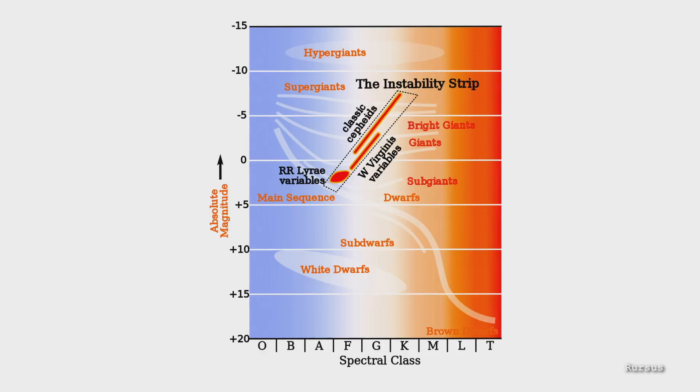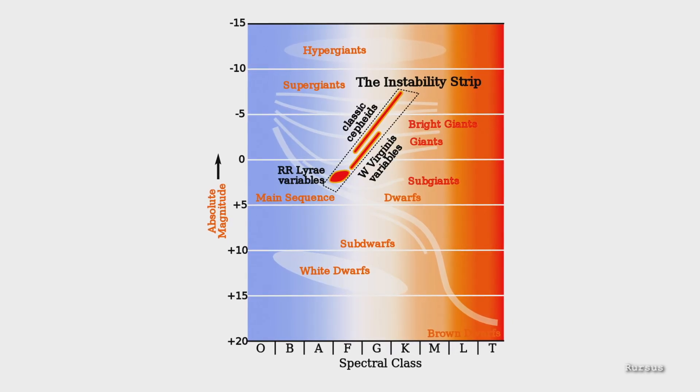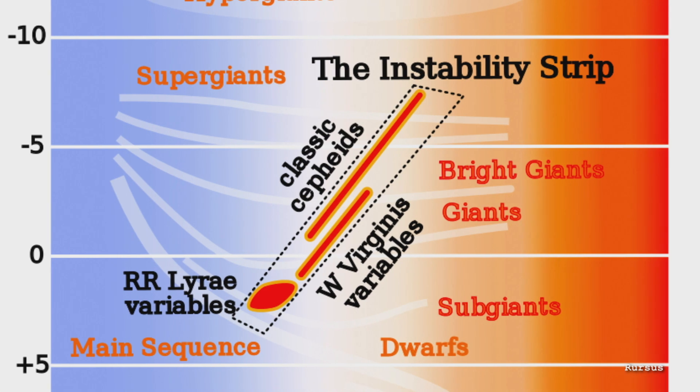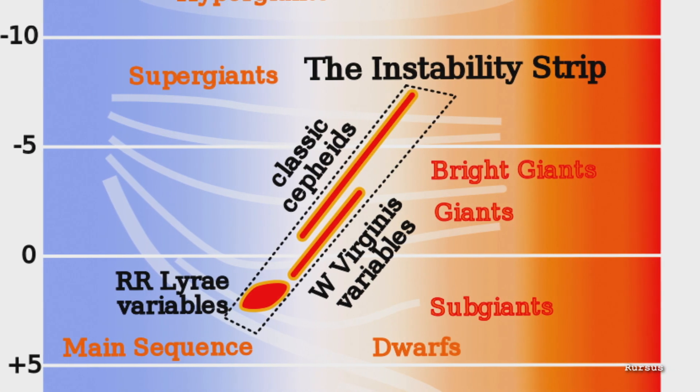Delta Scuti stars pulsate in multiple different modes and lie on a particular part of the Hertzsprung-Russell diagram — the very important diagnostic diagram used in stellar evolution studies. This area is called the instability strip. In addition, there were even more variable stars found, including a handful of gamma Doradus-type stars.